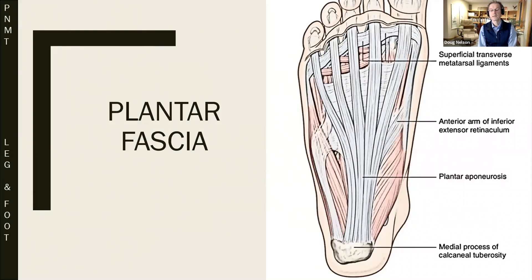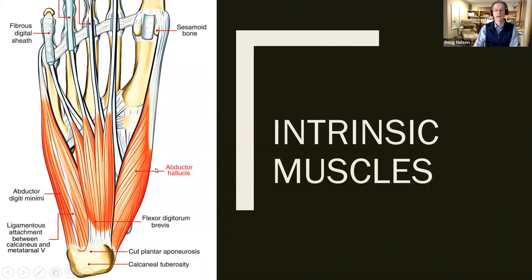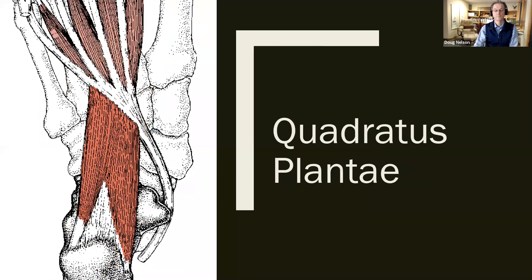We'll spend time on the foot with the plantar fascia. Take a look at the aponeurosis and understand its anatomy. Underneath it, you have the flexor digitorum brevis muscles, the digiti minimi, and we will definitely spend some time with the very important muscle called the abductor hallucis. Underneath that layer is the quadratus plantae, a very important muscle that presents oftentimes as heel pain in the foot.